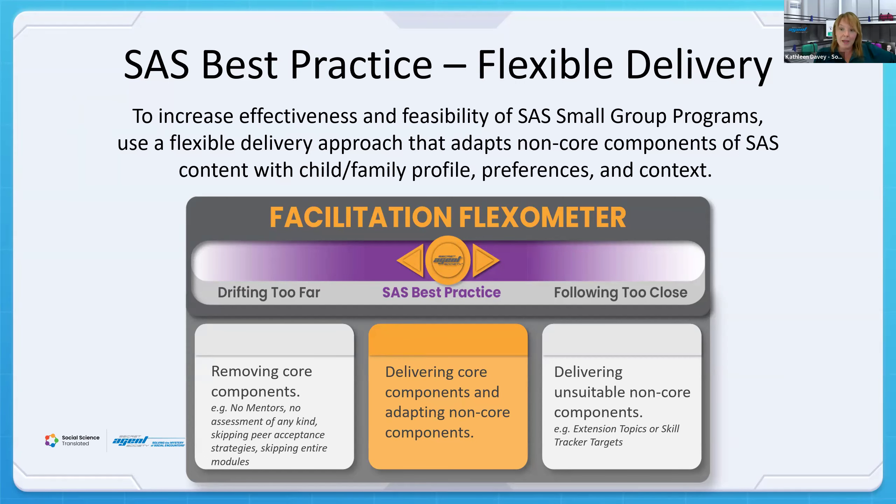Best practice delivery is when you have all the core components and you're adapting them to meet the needs. Drifting too far means removing large chunks of core components. Following too closely might mean reading all the scripts instead of making it individualized, doing all optional high-level content for kids it's not suitable for, or not customizing skill tracker targets. There's a whole range, and the facilitation flexometer helps you find the sweet spot in the middle.